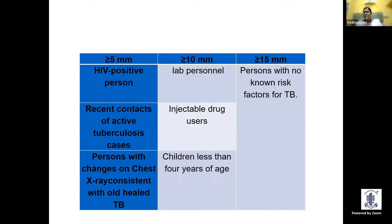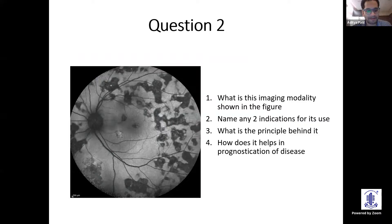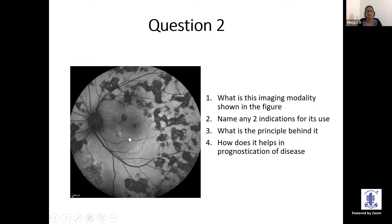We move to question 2. Imaging in uveitis is very important. I'd like you to identify this imaging modality, its indications, the principle behind it, and how it helps. One of you can take a minute to answer. Shweta answered: this is fundus autofluorescence (FAF). Two indications are ARMD geographical atrophy and to identify astrocytic hamartomas or drusen. The principle is autofluorescence of lipofuscin in the retinal pigment epithelium. It helps in prognostication — assessing whether the RPE is intact, alive, or dead.